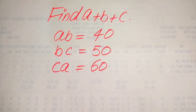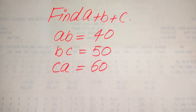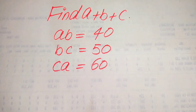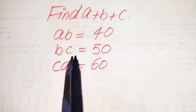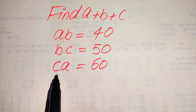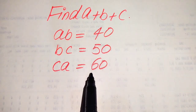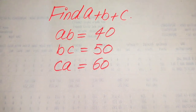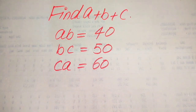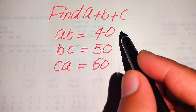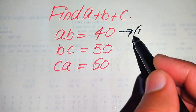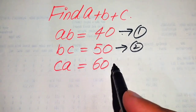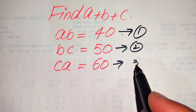Hello everyone. How to solve this problem for the values of A plus B plus C. If we have AB equals 40, BC equals 50, and CA equals 60. We just need to find the value of A plus B plus C from here. We call this equation number 1, this is equation number 2, and this is equation number 3.